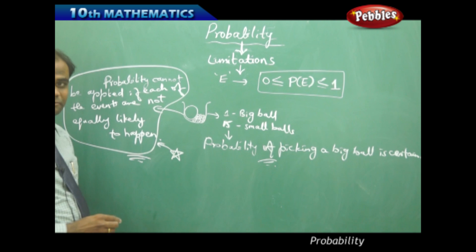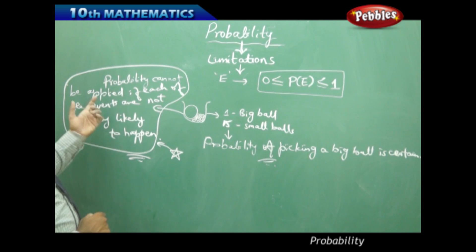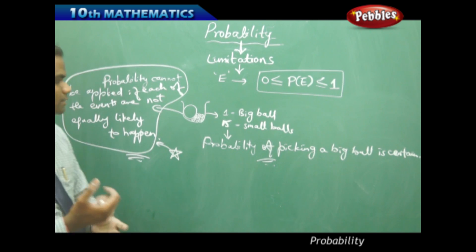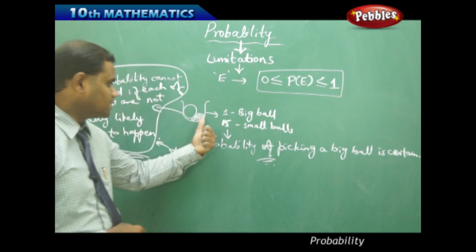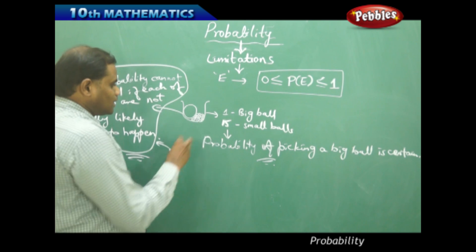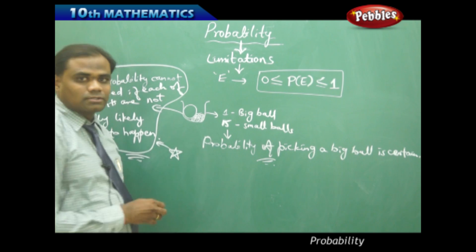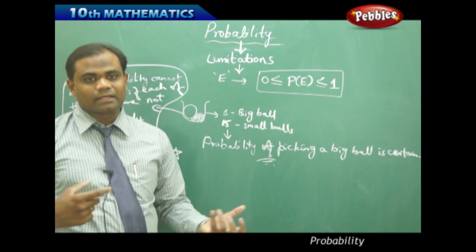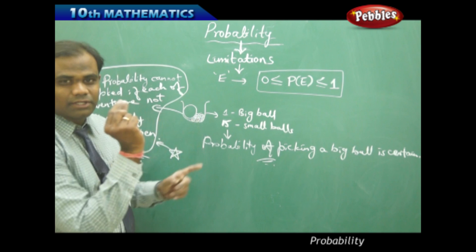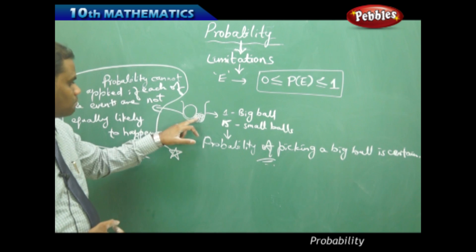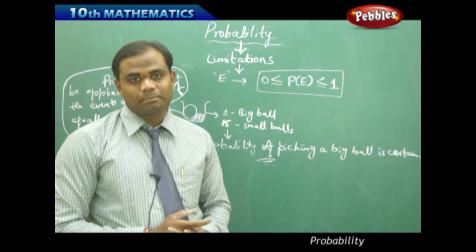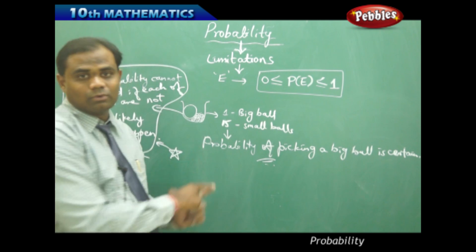When I define probability, each event has to be equally likely to happen. In this case, it fails because picking up each of the small balls is equally likely with each other, but when compared with the big ball, it is not equally likely to happen.